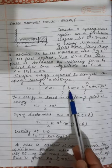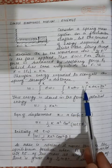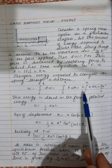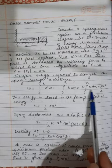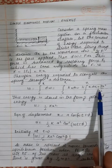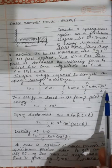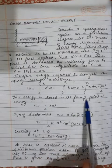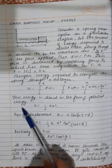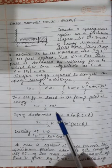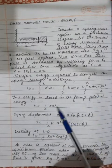Integrating from 0 to x: since k is constant, W = k∫₀ˣ x dx = kx²/2. This energy is stored in the form of potential energy: U = (1/2)kx².